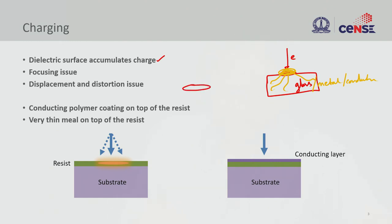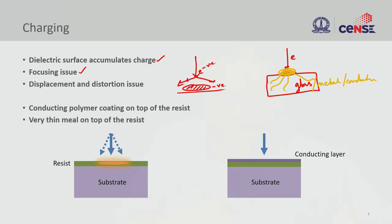If you have a charge cloud which is negatively charged, and then an electron beam which is also negatively charged, the charge cloud will deflect the beam. This is similar to what we use for electrostatic lenses, but now you are creating this lens on the substrate itself because you are unable to dissipate the charge accumulation. It will create focusing issues — displacement and distortions are the problems you see because of this charging.